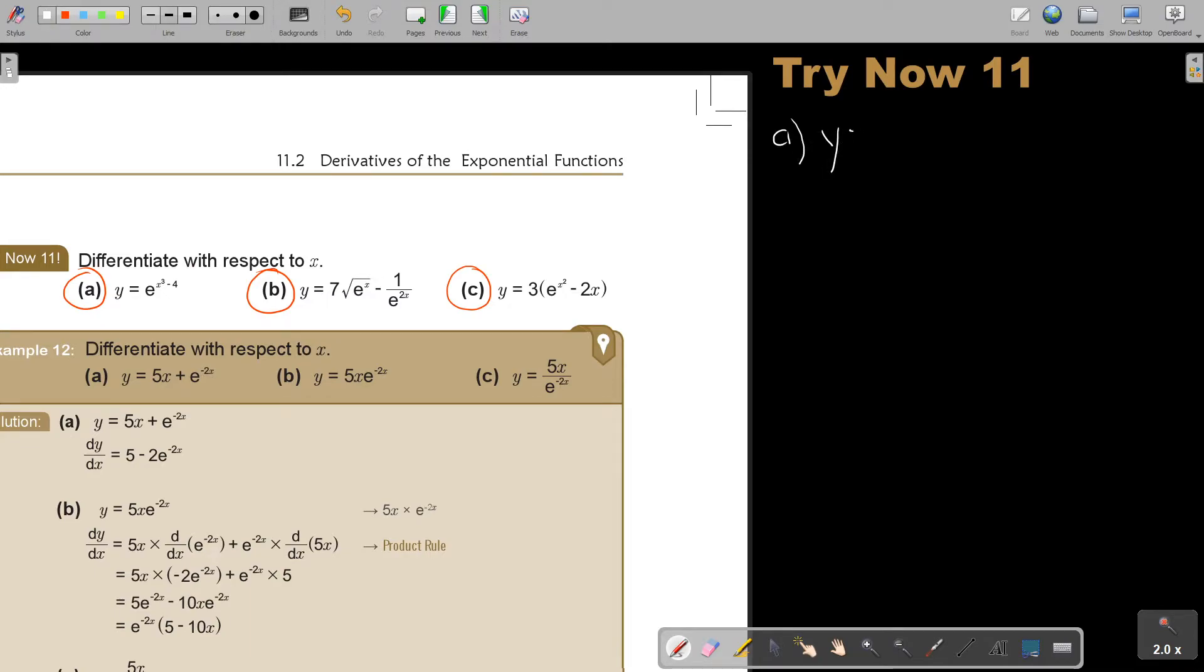This is y is equal to e. I will show you the short way also now, but first let's do the long way. So there's a 3. So I use the chain rule. So make it e equals. Don't forget that this is going to become u. So e^u and u is equal to x^3 minus 4.